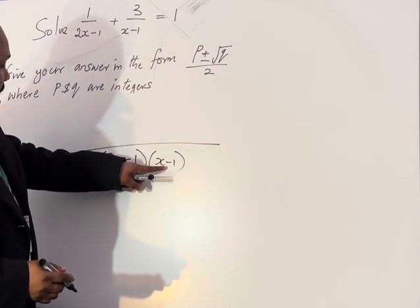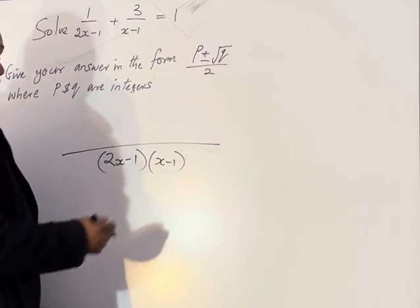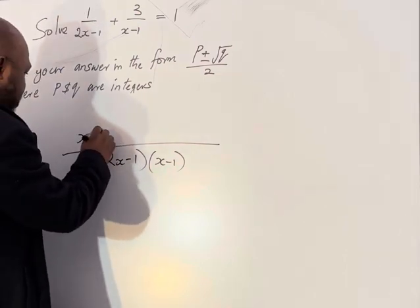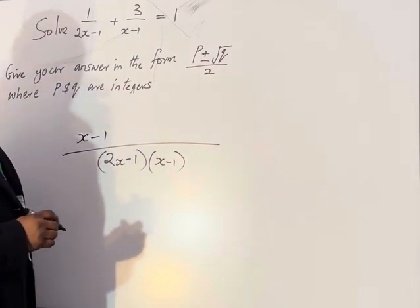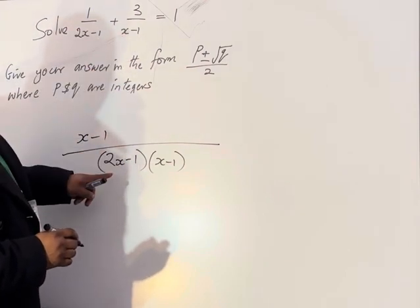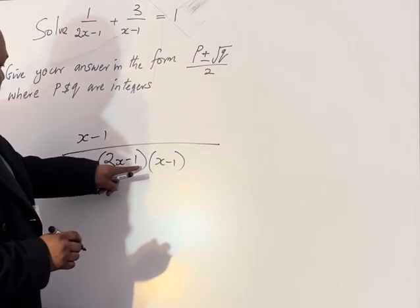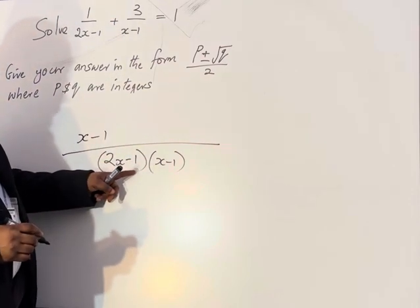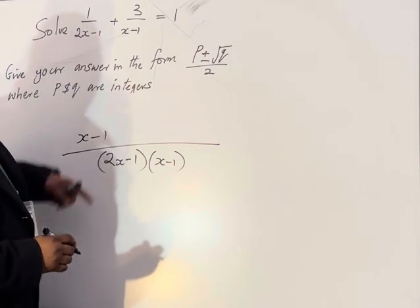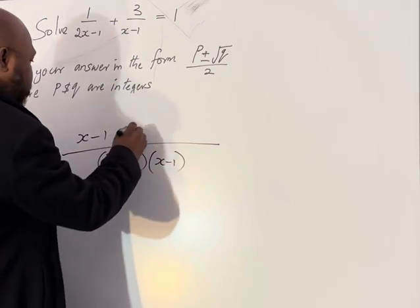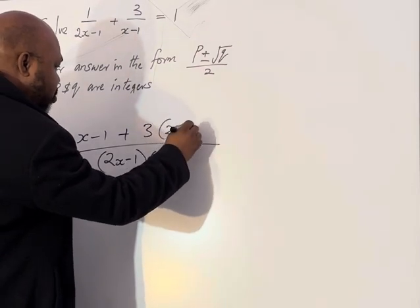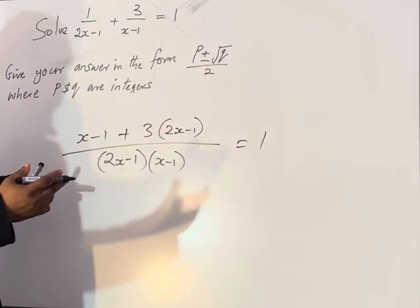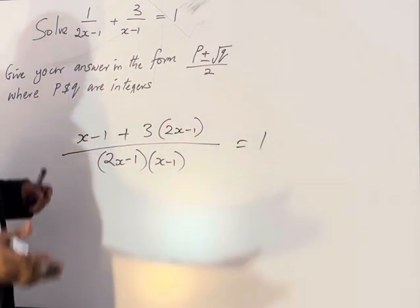So (2x-1) into (2x-1)(x-1) will be (x-1). So (x-1) multiplied by 1 gives us (x-1). And (x-1) into (2x-1)(x-1) is (2x-1), so (2x-1) multiplied by 3 gives us 3(2x-1) equals 1.